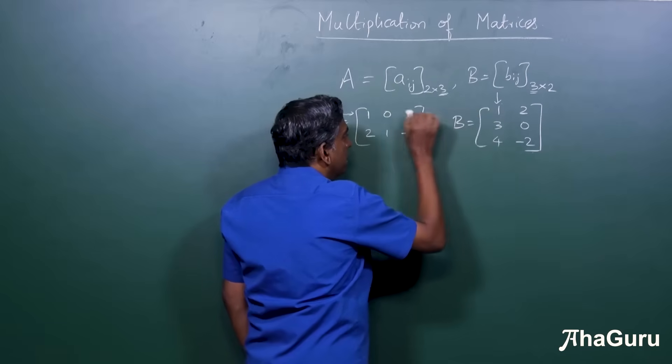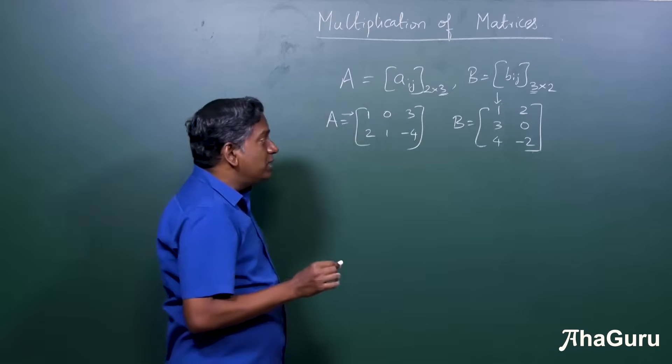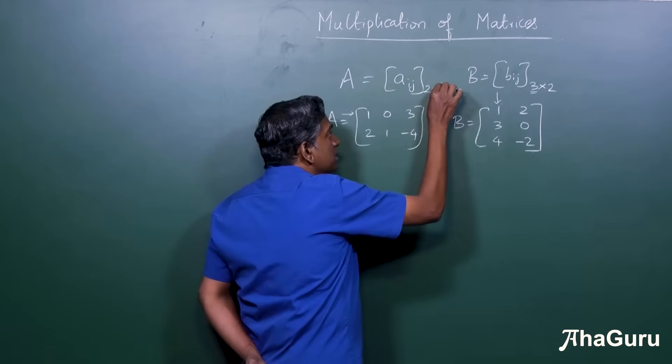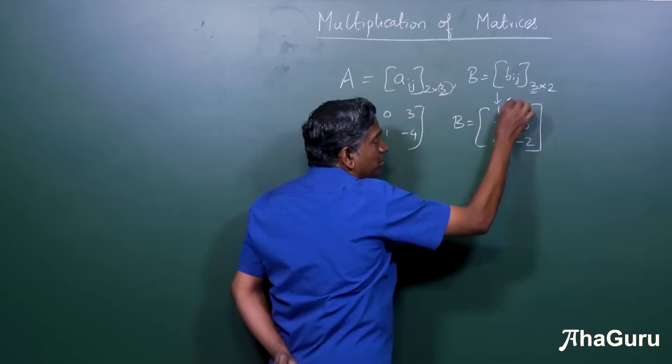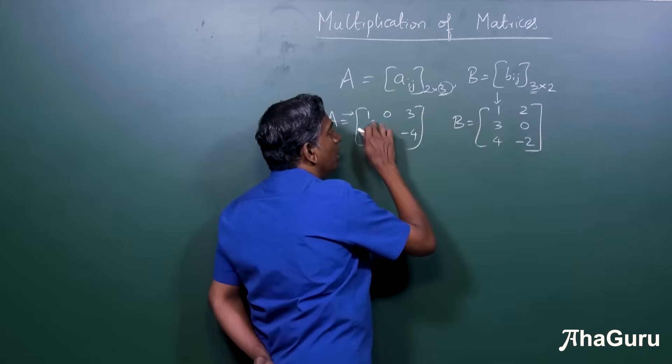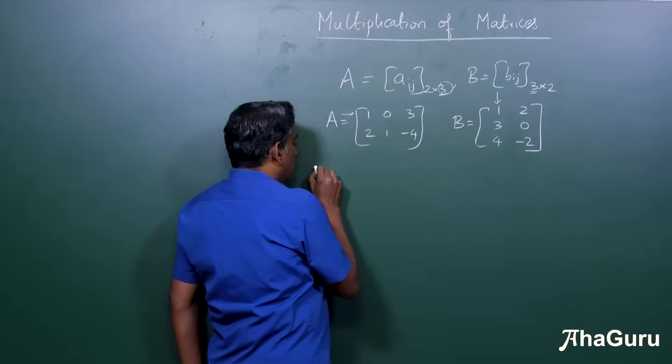You multiply entry by entry. 1 and 1, 0 and 3, 3 and 4. Now you will see why it's important that these two numbers are equal. What is this number? This is the number of columns in A. What is this number? This is the number of rows in B. Now those two have to be equal if you want to be able to multiply term by term.